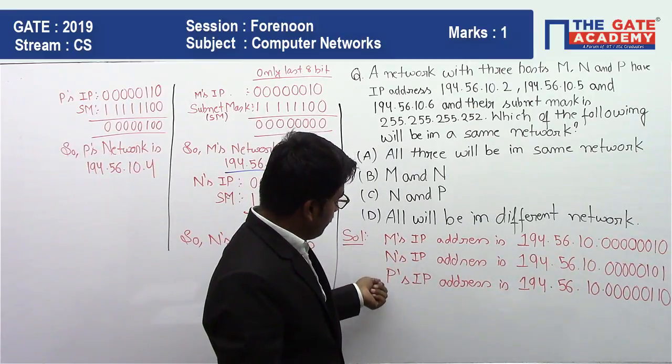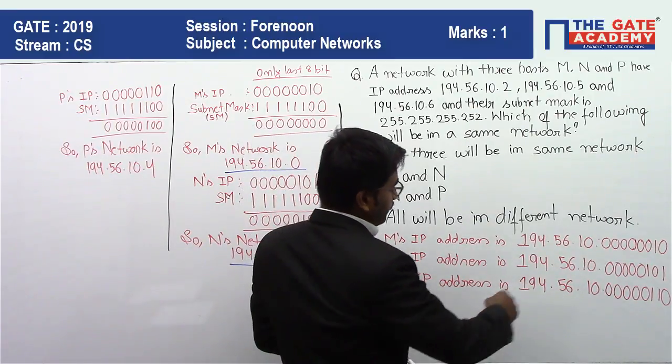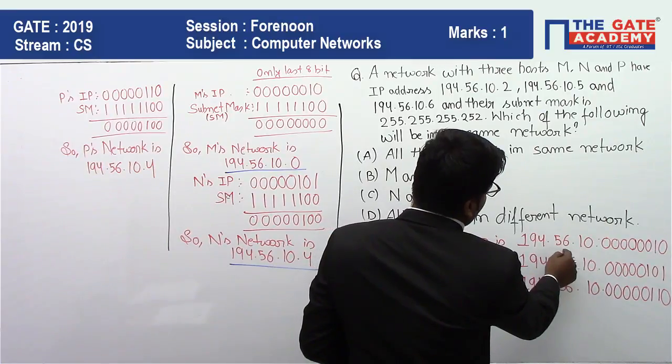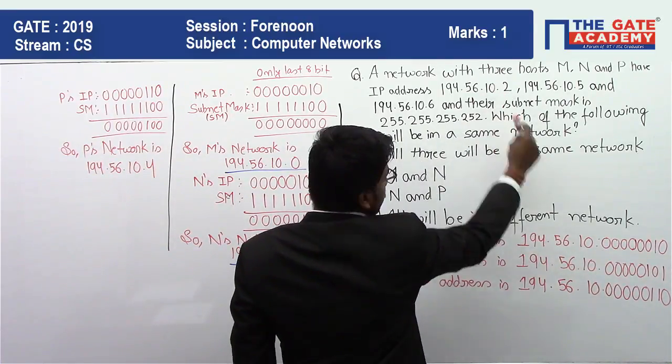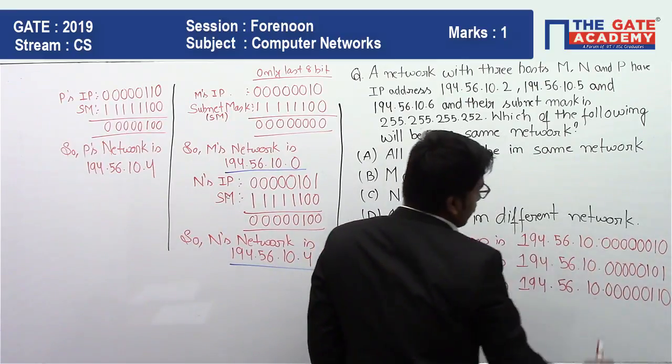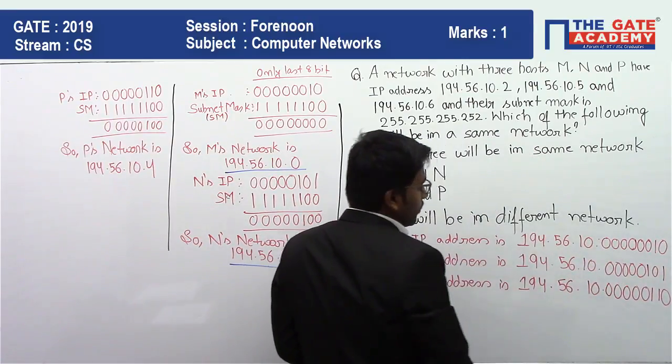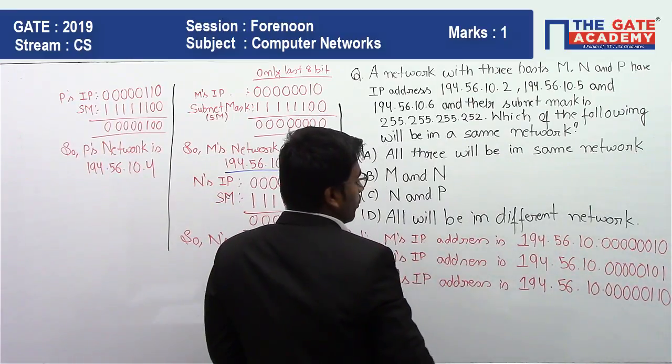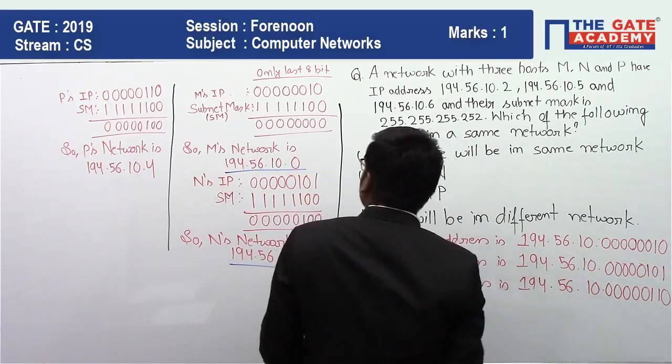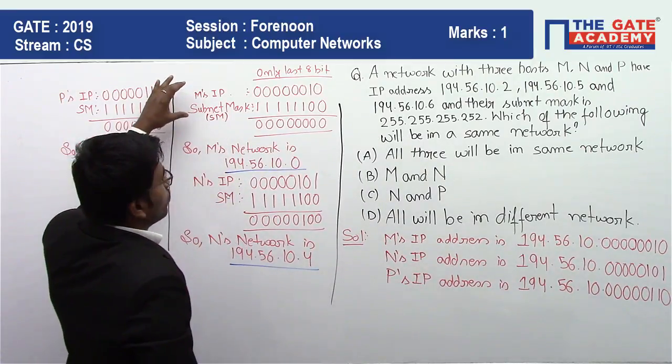Here 194.56.10 dot 2. I have written 2 in binary numbers. Since we have to represent in 8 decimals, so we have represented in 8 decimals.